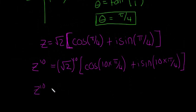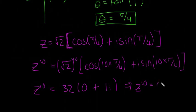So we're going to get z to the power of 10 is going to be equal to, well let's say it's going to be 32 multiplied by 0, so this ends up being 0, and this ends up being actually just 1i. So our final answer is z to the power of 10 is equal to 0 plus 32i.